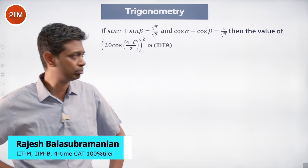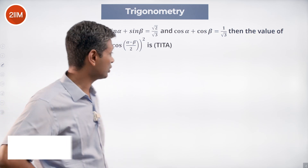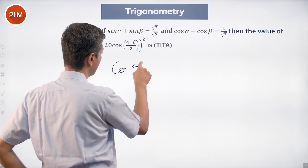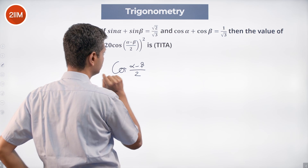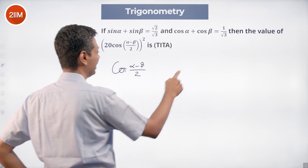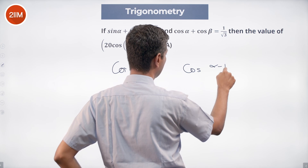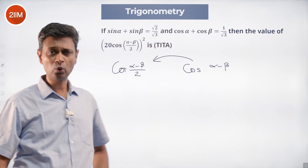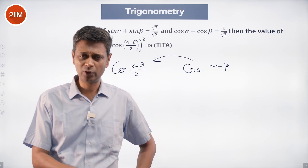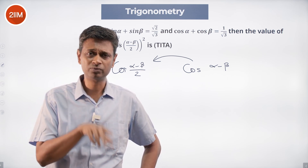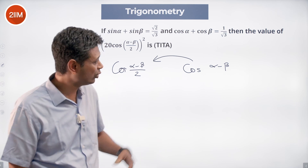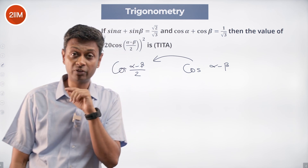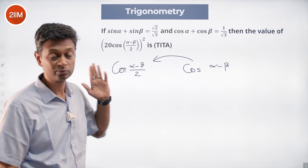Absolutely lovely question. First thing to note: we have cos((α-β)/2) and we need to find this. If we have a mechanism to find cos(α-β), then we are through. We know that if we know cos(2θ) we can find cos(θ), and if we know cos(θ) we can find cos(θ/2). So lots of times in trigonometry we will have to operate from what we need.